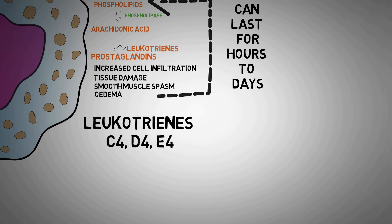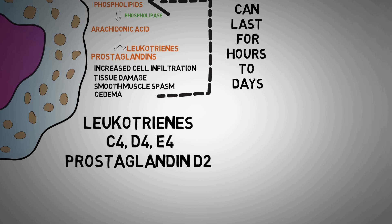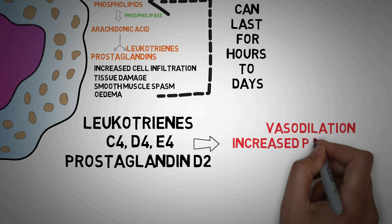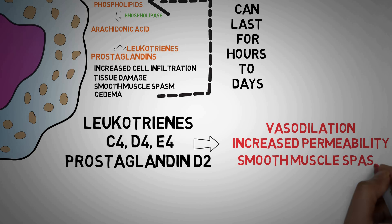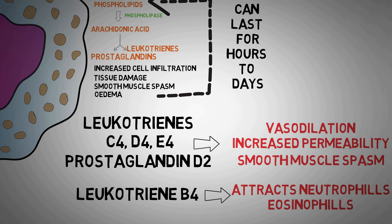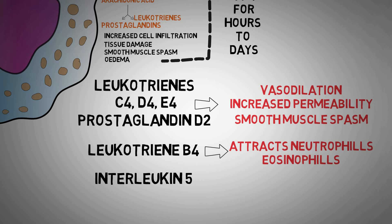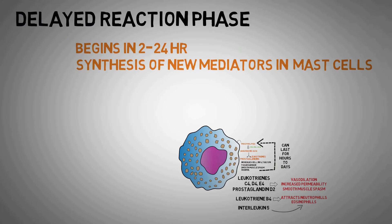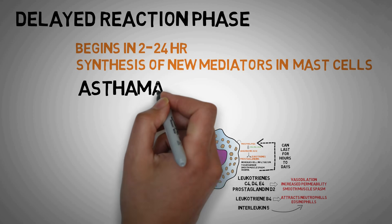Leukotriene C4, D4, and E4, and prostaglandin D2 all lead to vasodilation and increased vascular permeability, causing a continuous influx of inflammatory cells at the site of allergy. They also cause smooth muscle spasm. Leukotriene B4 leads to infiltration of more cells like neutrophils and eosinophils because it is a chemo-attractant — a chemical which attracts other cells to the site where it is produced. Interleukin-5 is another important cytokine produced by mast cells and is the most potent activator of eosinophils. These recruited cells amplify and sustain the inflammatory response without additional exposure to allergen. The late phase reaction is the major cause of symptoms in conditions like asthma.